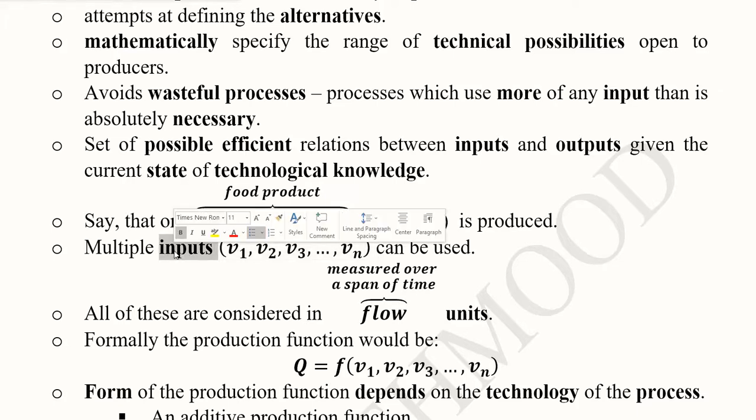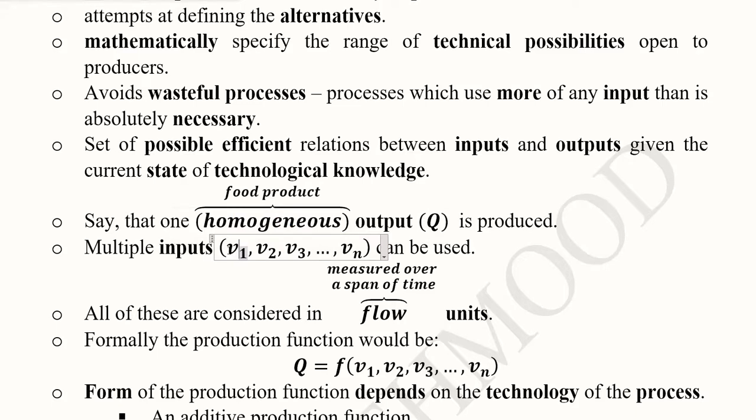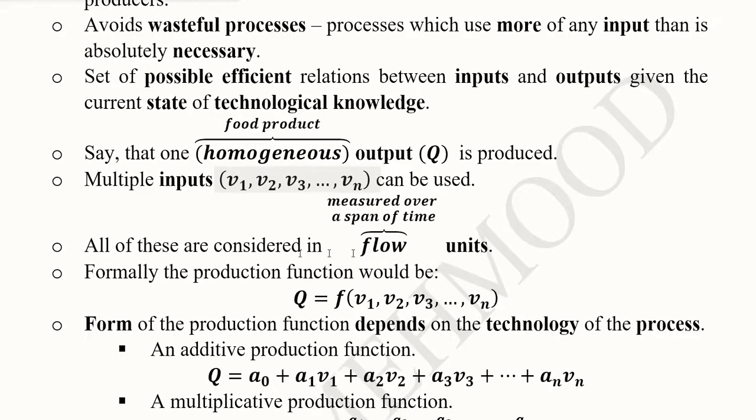The inputs are usually multiple. We can absorb more than one inputs in a production function, for instance from v1 till vn. We can assume that capital and labor are the two inputs, or we can assume capital, labor, energy, material, ICT and so on. We can consider a number of inputs in our production function.